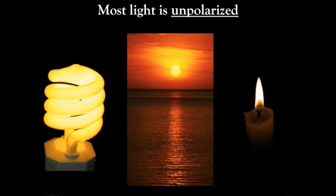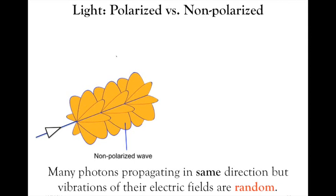Most light we encounter during the day is unpolarized — light from a fluorescent bulb, the sun, or a candle is all unpolarized. This means that photons are all propagating along the same direction, but the vibrations of their electric fields are completely random. There's no specific direction they're vibrating, it's completely random — that's a non-polarized wave.